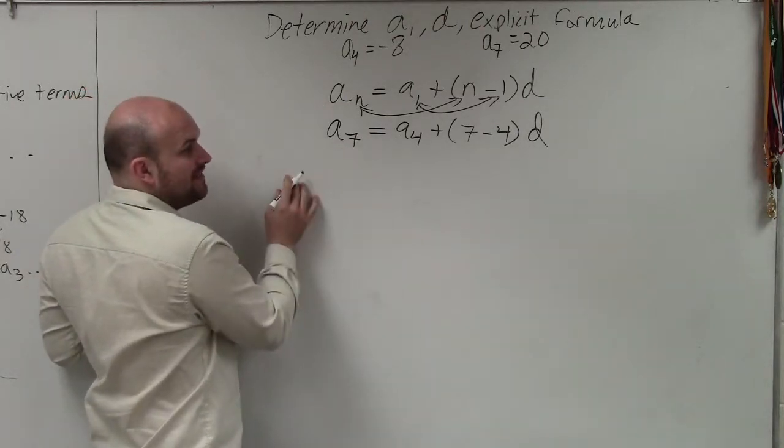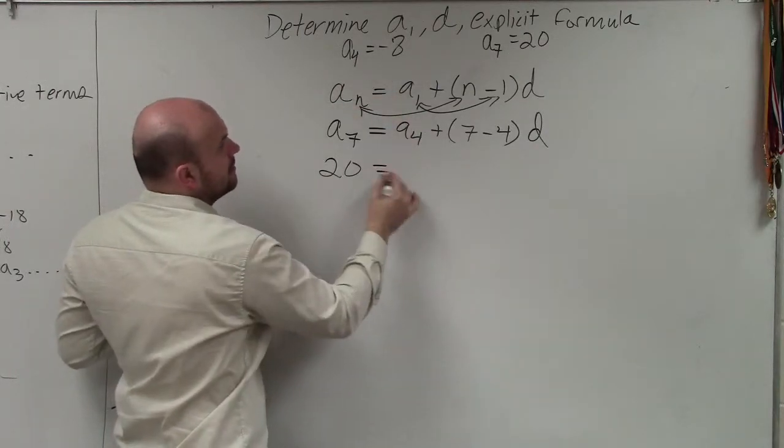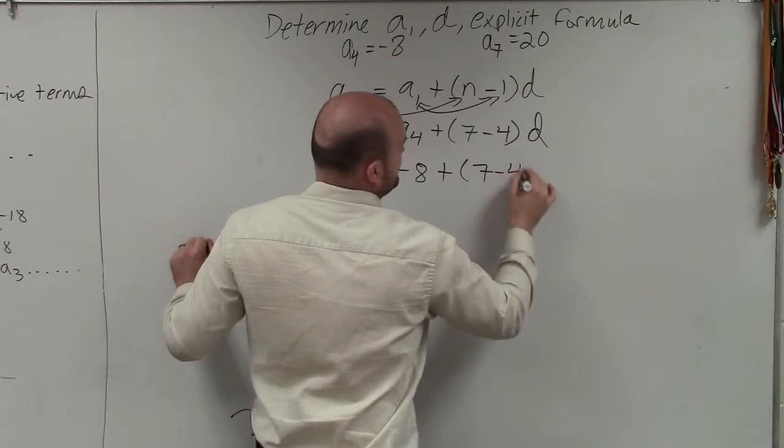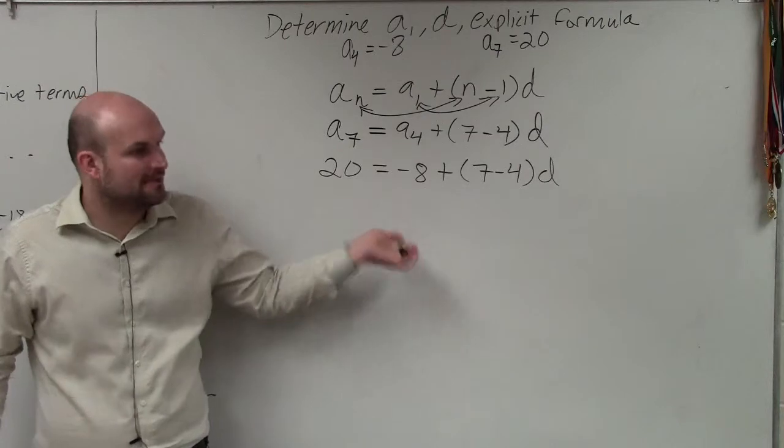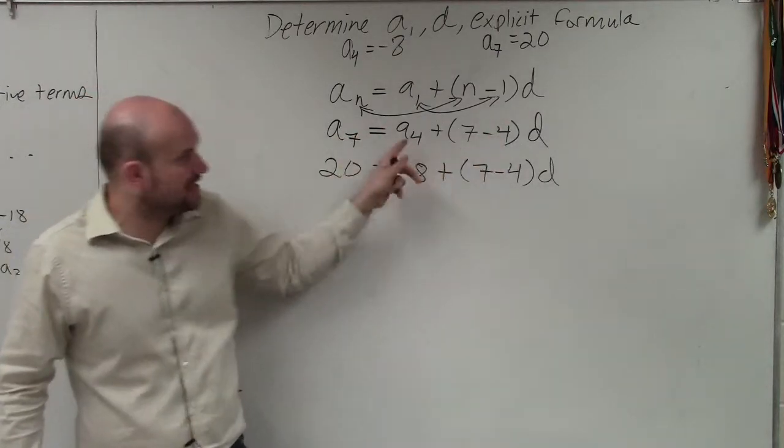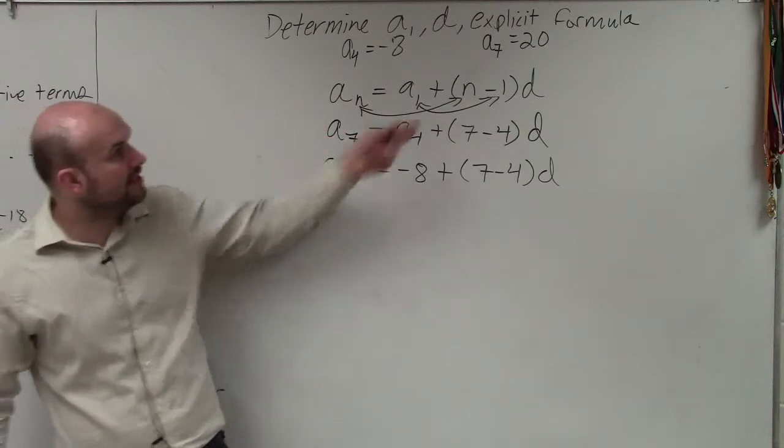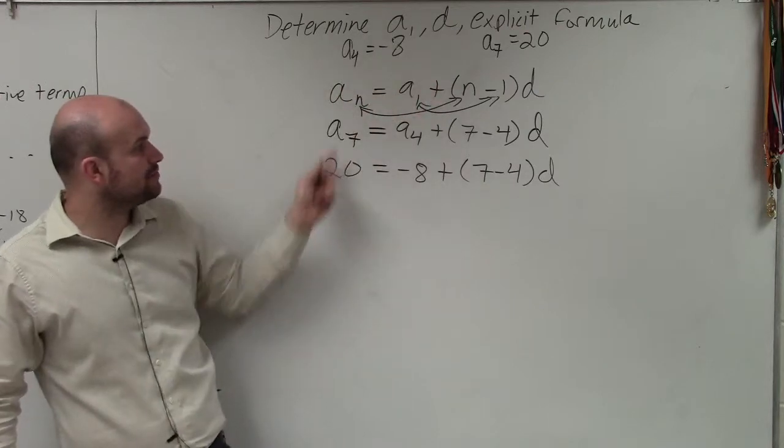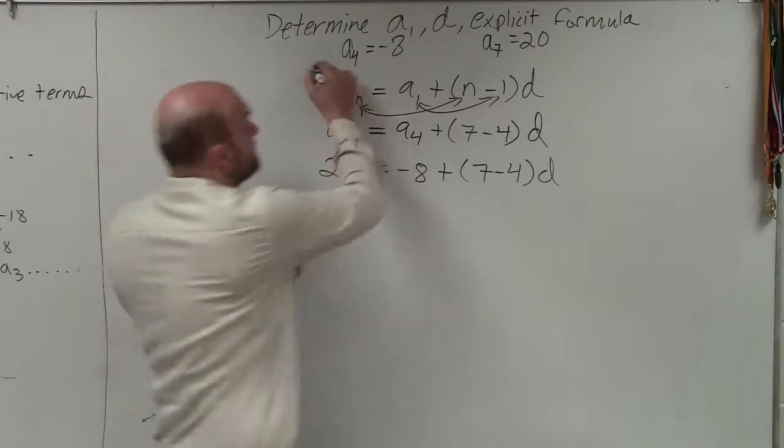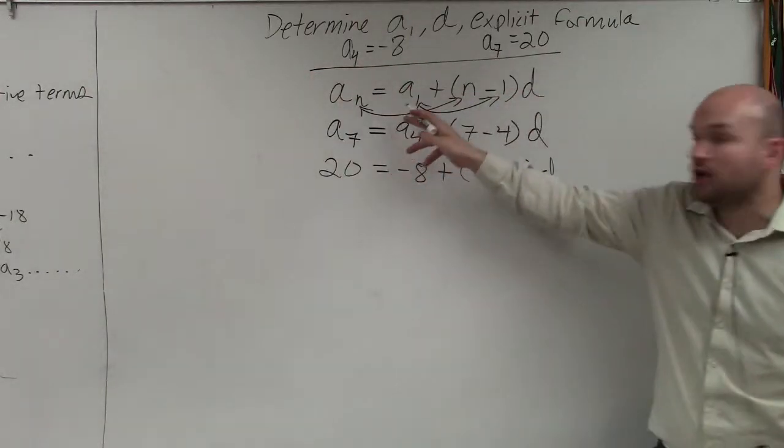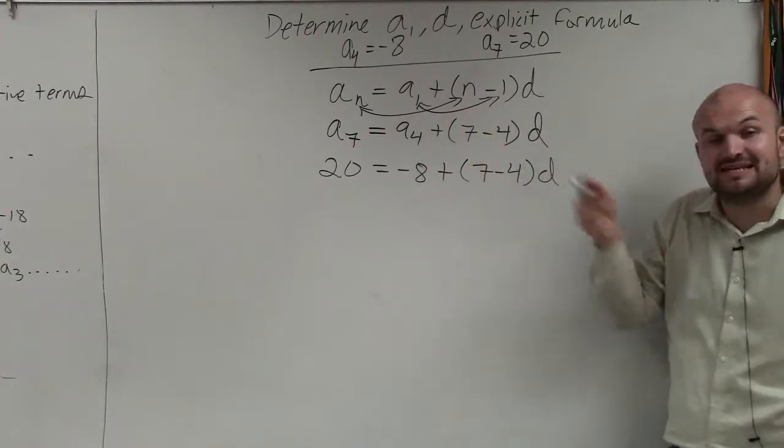So now, do we know what the value of a to the 7th is? 20. Do we know what the value of a to the 4th is? Negative 8. Plus 7 minus 4 times d. So yes, you are correct. I just didn't do it in the same step, because I wanted to make sure you guys saw this relationship before I did this relationship. So now, I replace a to the 7th with 20, and I replace a to the 4th with negative 8. Does everybody see what I've done so far? I've basically taken the information that I've been given, and I plugged it all into the explicit formula.